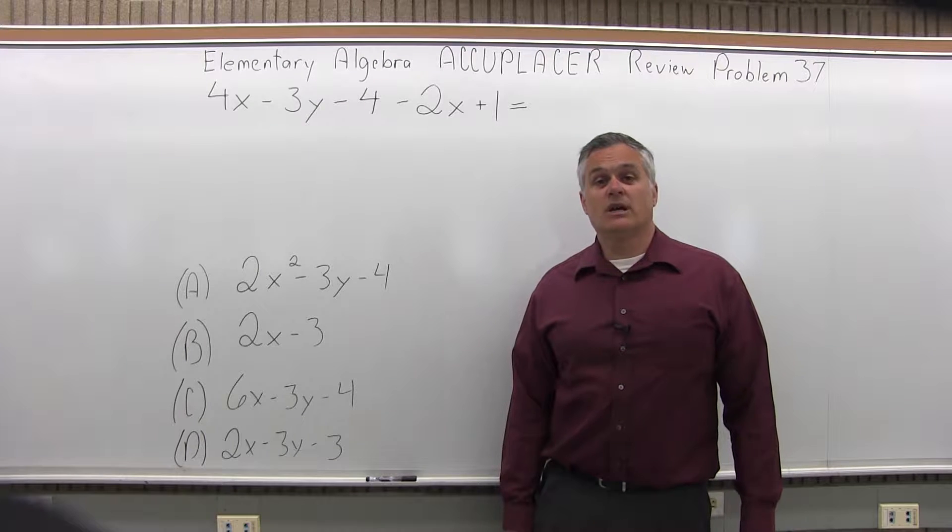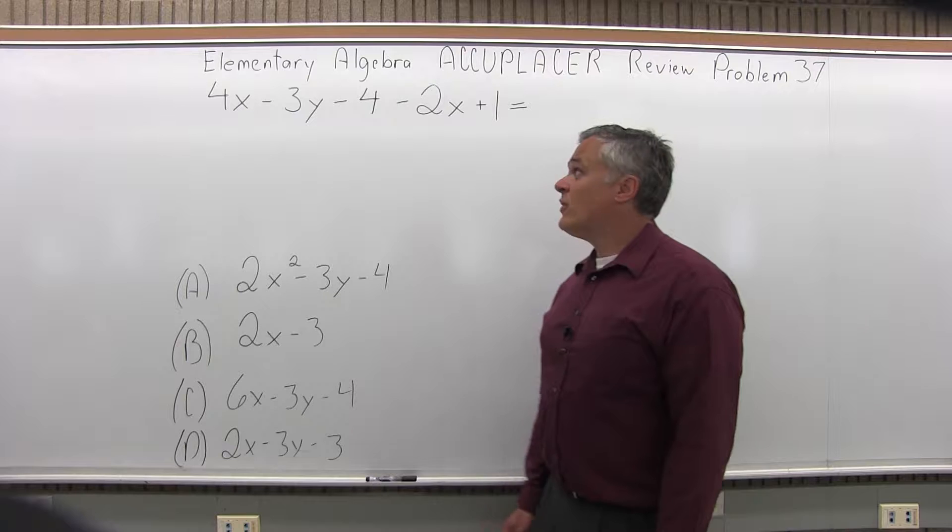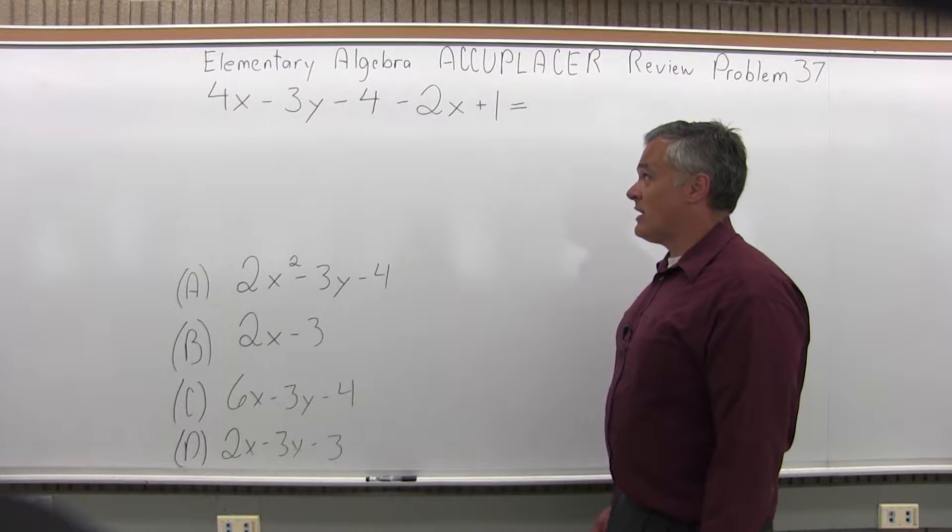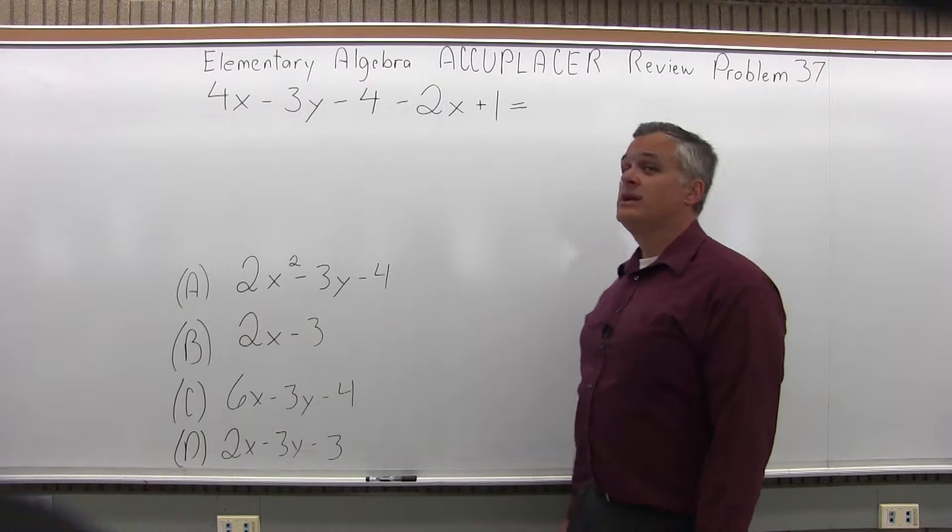This is the Elementary Algebra Accuplacer Review, Problem 37. We have 4x minus 3y minus 4 minus 2x plus 1 equals what?